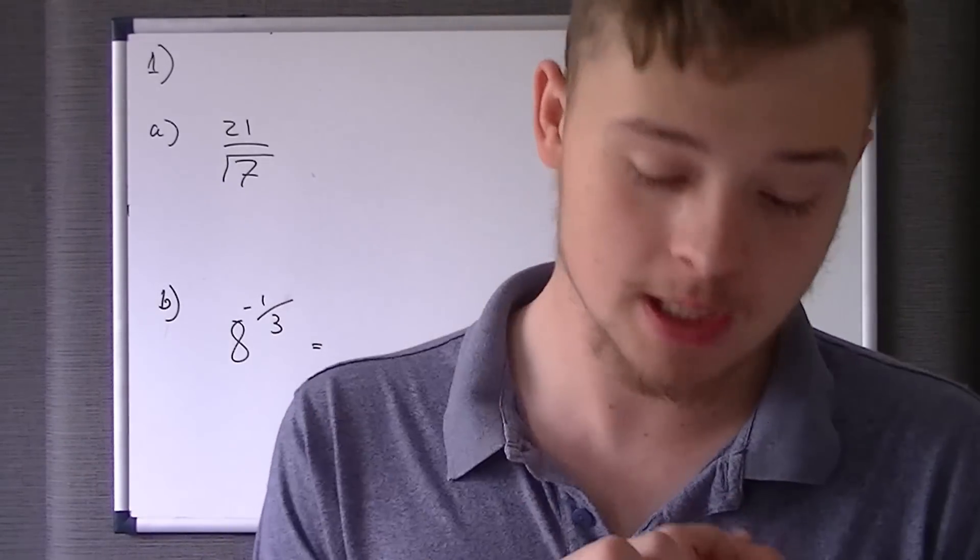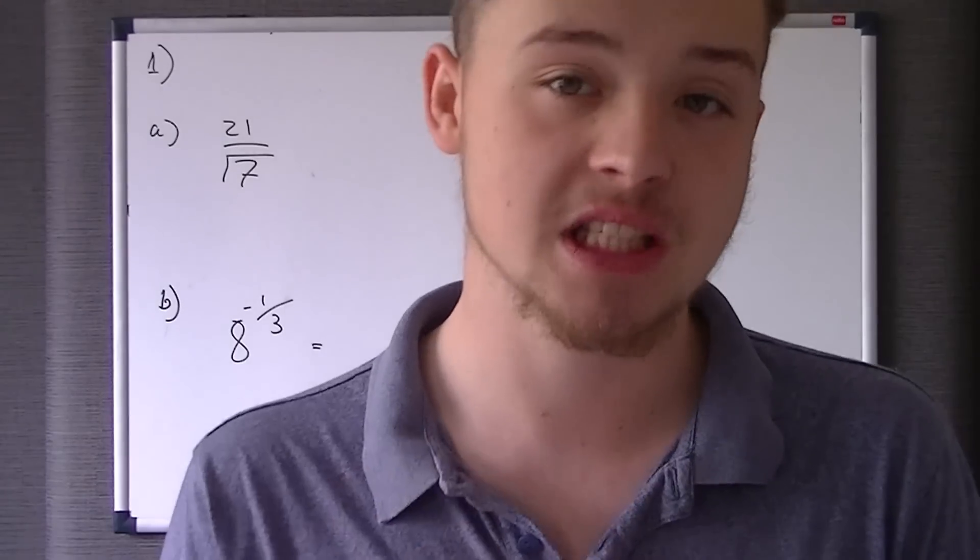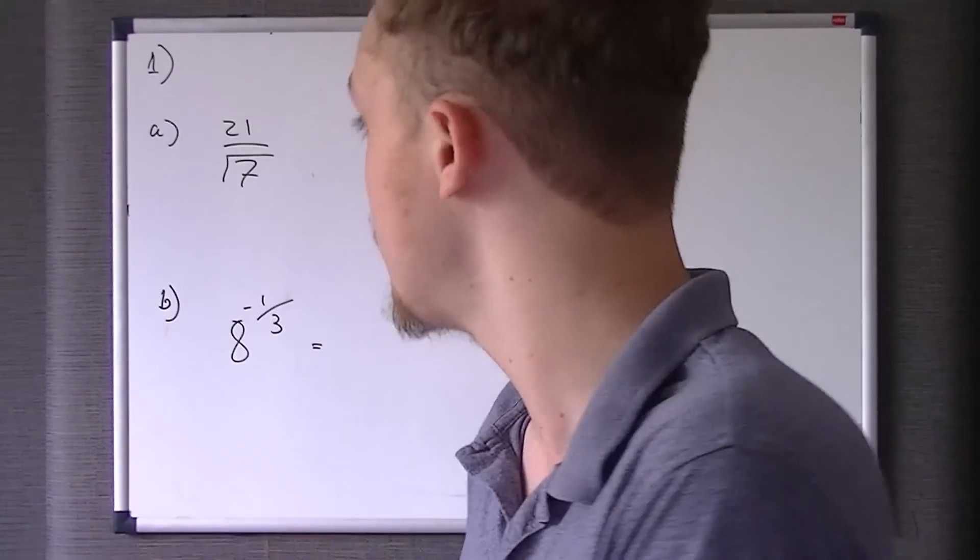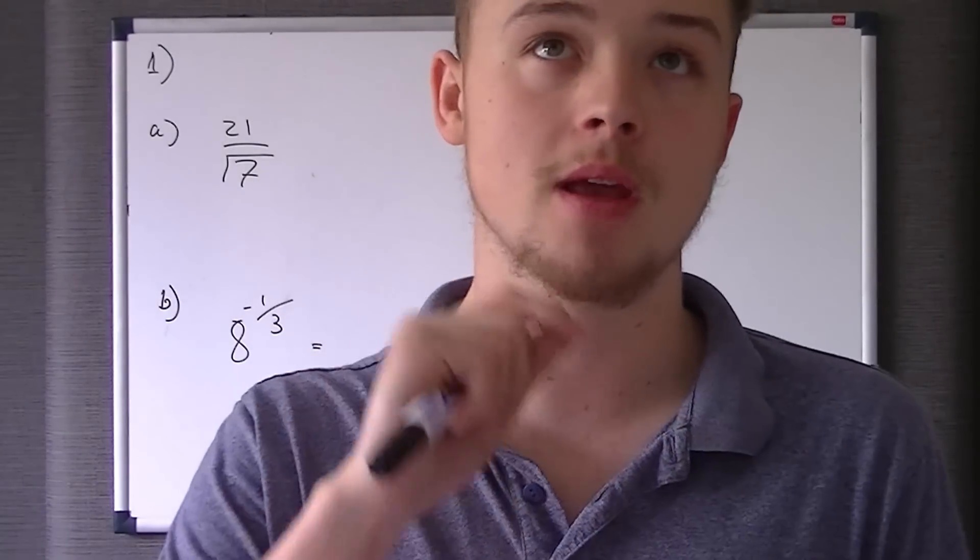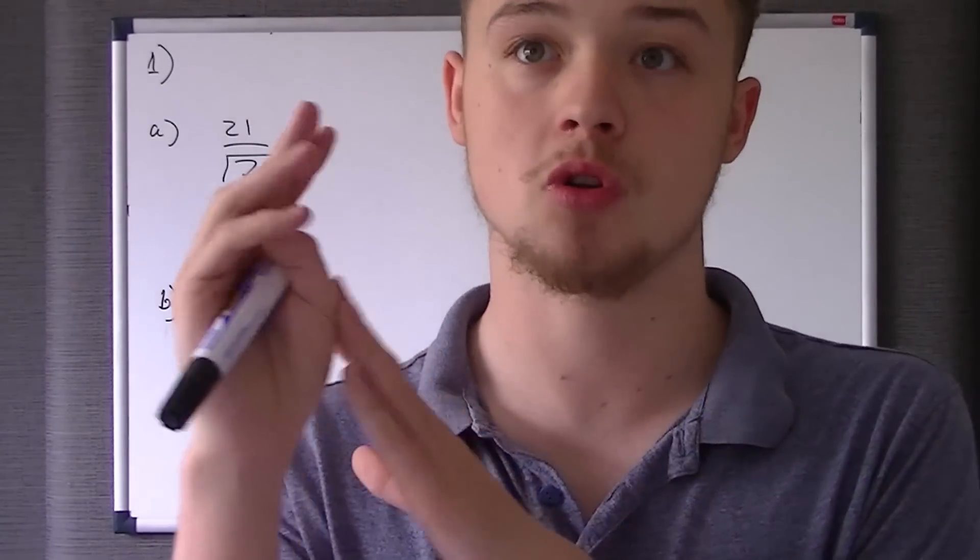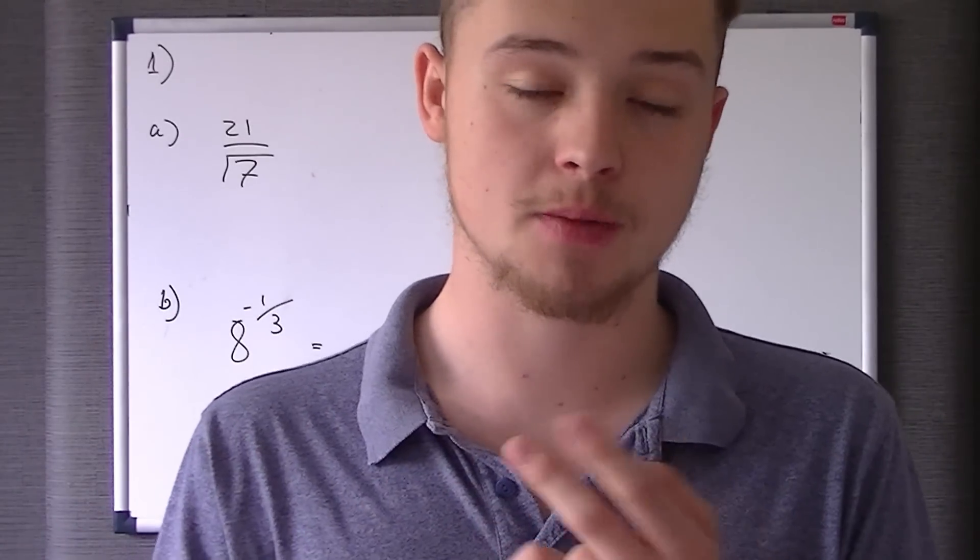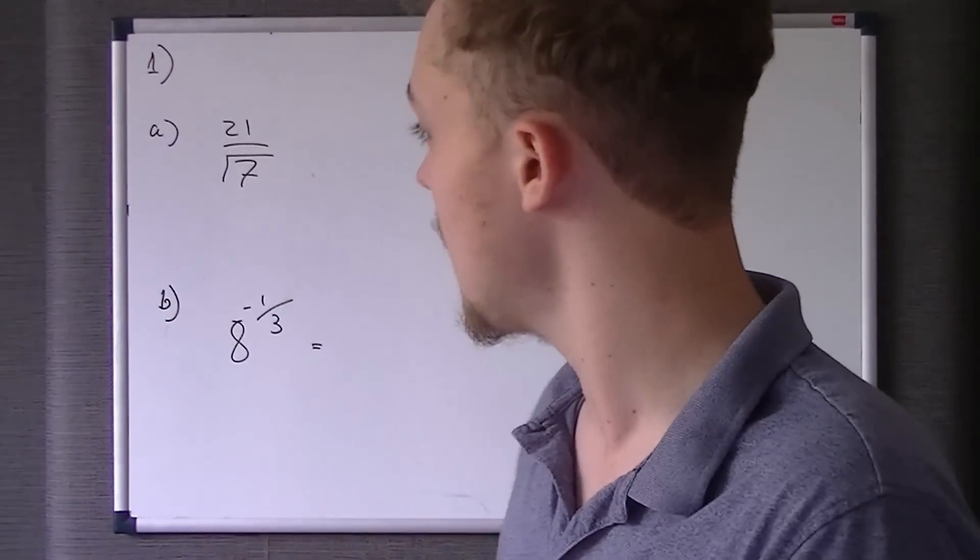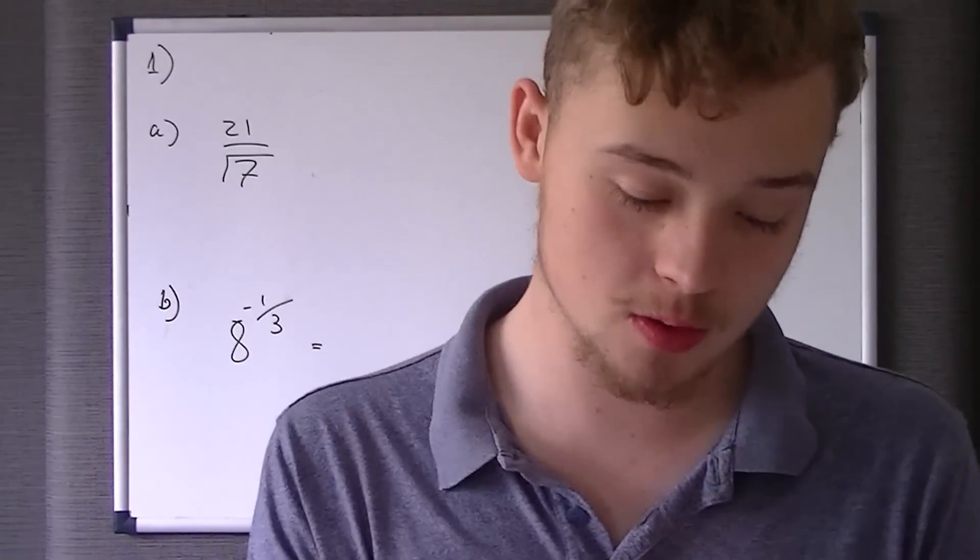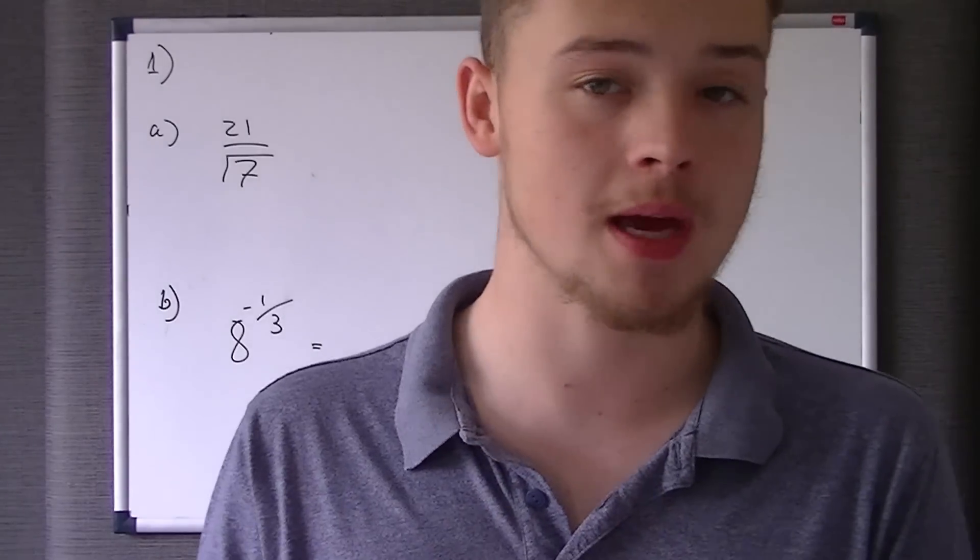And the only way of changing a surd into a normal number is by timesing it by itself. So in other words, times root 7 by root 7, that will give us 7.